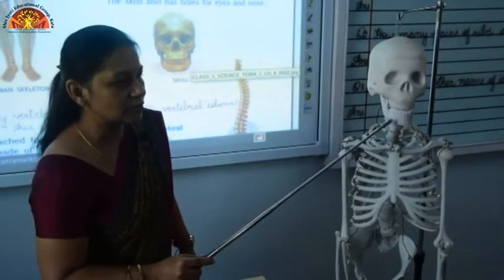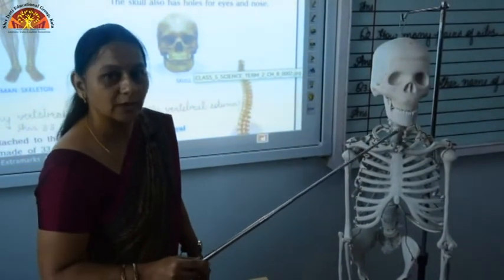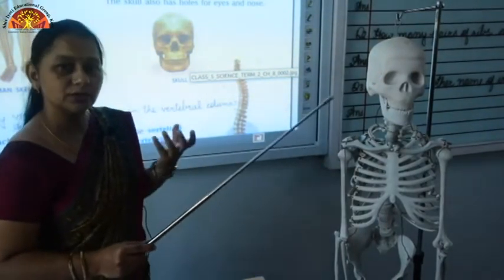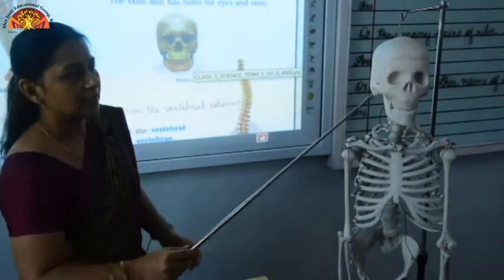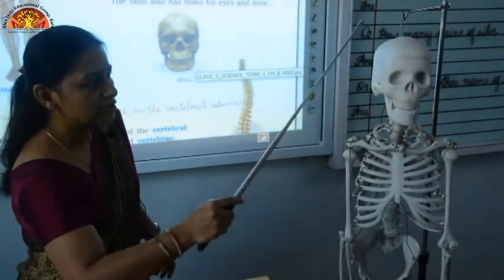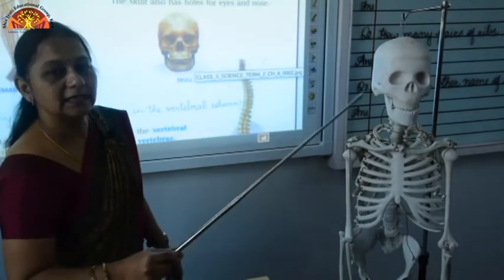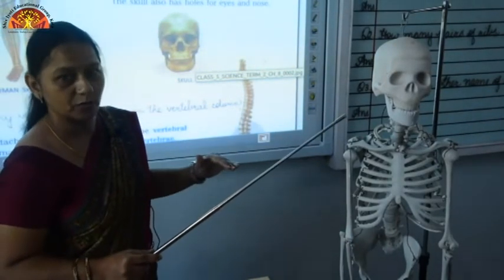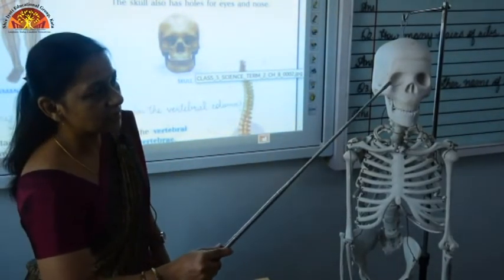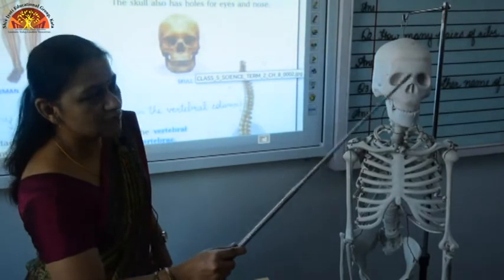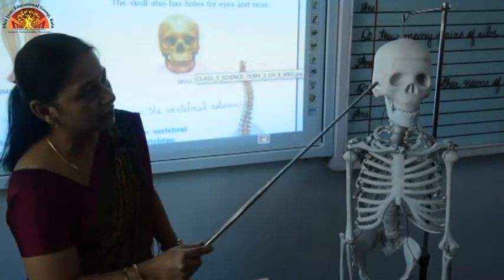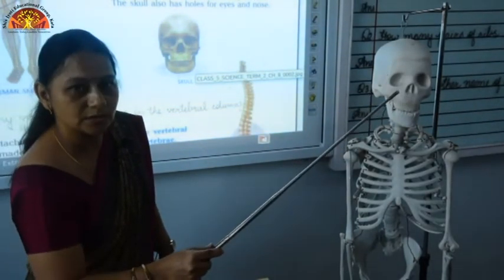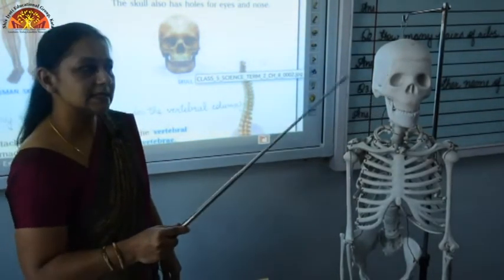In the face region you have 14 facial bones, and out of these 14 facial bones only the lower jaw bone is movable. This lower jaw bone helps us to speak and to eat. The other rest of the bones are all immovable. You can also see we have sockets for the eyes and nose in the skull.